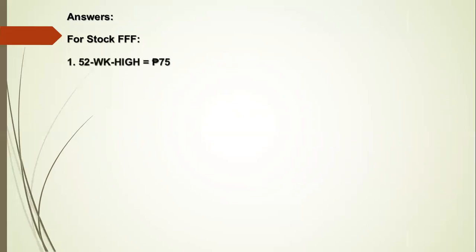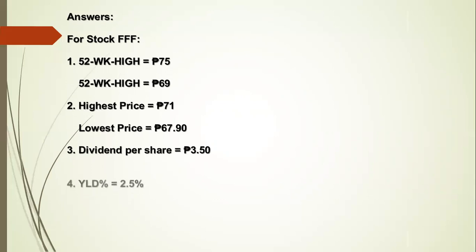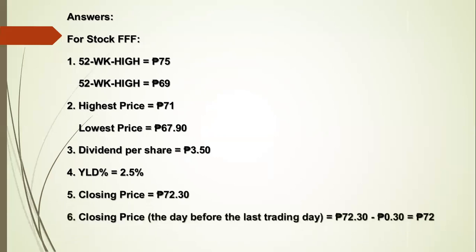For stock FFF — Number one: 52WK High = 75 pesos; 52WK Low = 69 pesos. Number two: Highest price = 71 pesos; Lowest price = 67 pesos and 90 centavos. Number three: Dividend per share = 70 pesos and 50 centavos. Number four: YLD percentage = 2.5%. Number five: Closing price = 72 pesos and 30 centavos. Number six: Closing price the day before = 72 pesos and 30 centavos minus 30 centavos = 72 pesos.